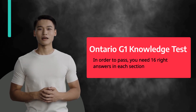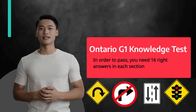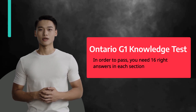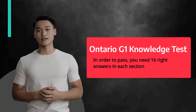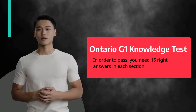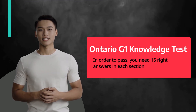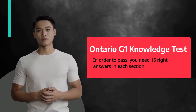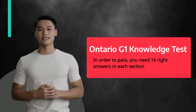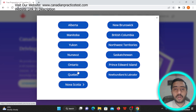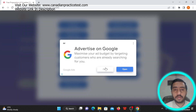Hello everyone. In today's video I'm going to share with you a road sign question and answer from Ontario G1 knowledge test. In this video you will see 40 questions — 20 will be on rules test and 20 will be on road sign test. In order to pass you need 16 right answers in each section. This is part one of this series; for more videos please check the playlist link in the description. We are going to click on this driving test and solve Ontario quizzes.